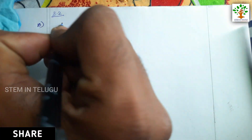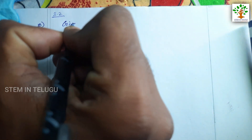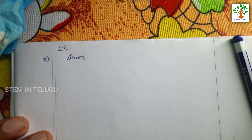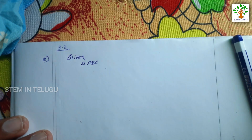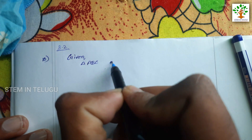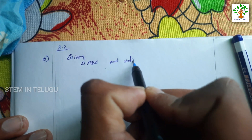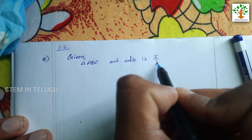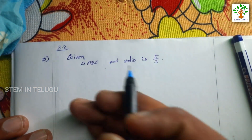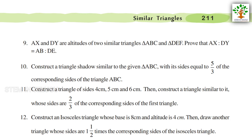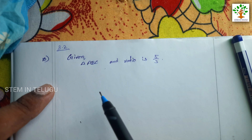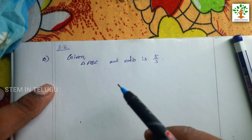First, the given information: we have the given triangle ABC, and the ratio is 5/3. For this sum, the ratio is measured, and we have to draw another triangle.